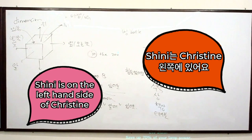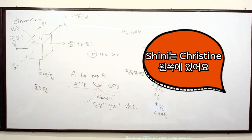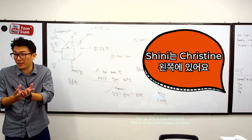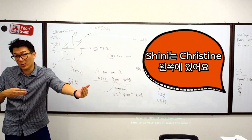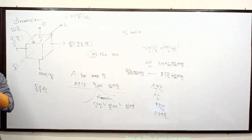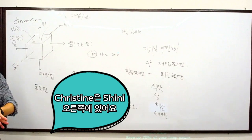So 신이는, if I start with 신이는, I'm talking about 신이, right? 신이 is the main topic in this sentence. 신이는 크리스틴 왼쪽에 있어요. Now change the topic. 크리스틴 is the main topic. 크리스틴는 신이 오른쪽에 있어요.